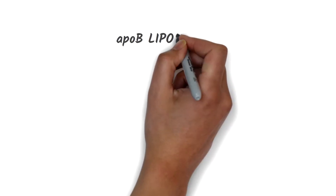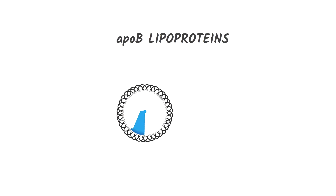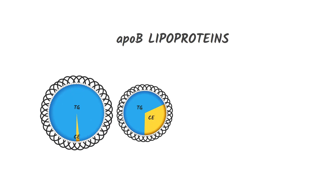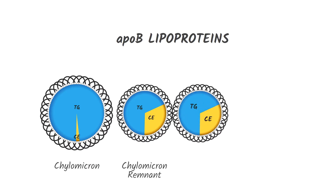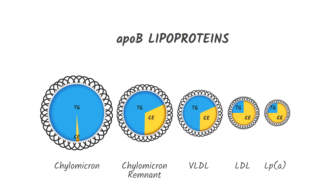ApoB lipoproteins are particles made up of varying amounts of triglycerides and cholesterol, most of which is cholesterol ester. There are five different classes of them, including chylomicrons, chylomicron remnants, VLDL, LDL, and LPA particles.